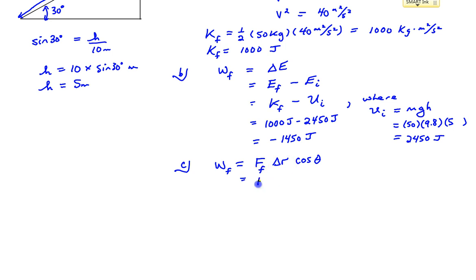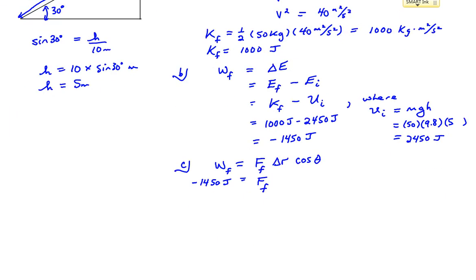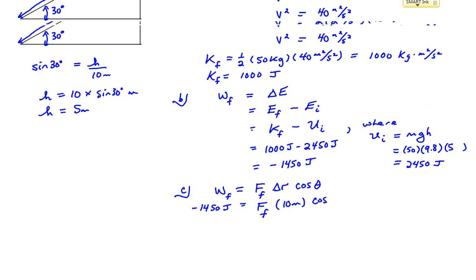The force of friction is what we're looking for. The work done by friction we just determined in the previous part to be negative 1,450 joules. The displacement, starting up here and going all the way down here is 10 meters.